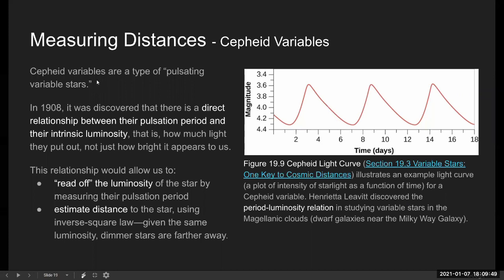Cepheid variables are one of the first standard candles that they started using. As in, these are special types of objects where you already know the luminosity, or you have some way of figuring out how much light they are putting out. So you can compare that with how much light we detect on Earth. And you can do the inverse calculation to figure out how far away those stars are.